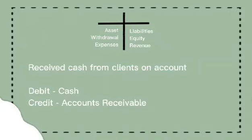Receive cash from clients on account. John Smith received cash from clients on account. That's why cash is in the debit side — it means napapasok ito kay John Smith. And the accounts receivable naman is on the credit side.